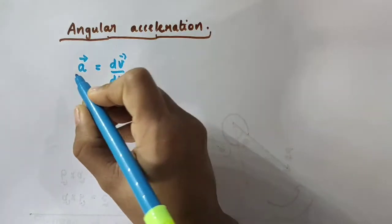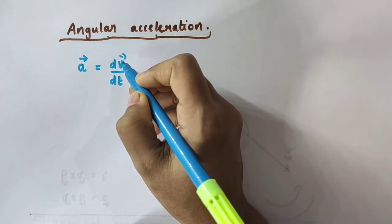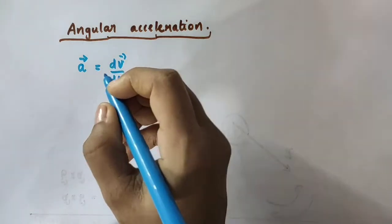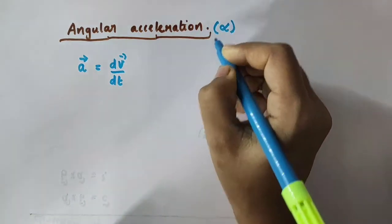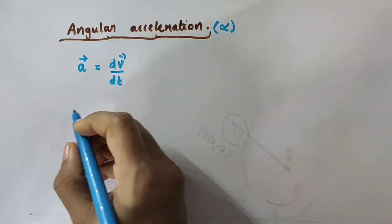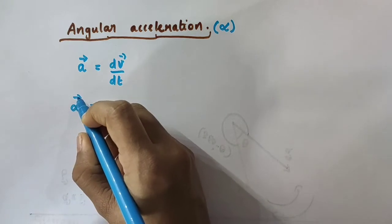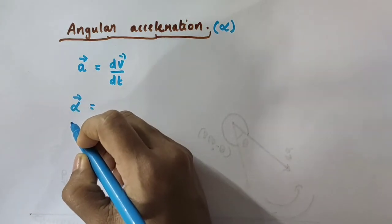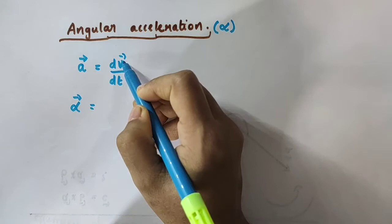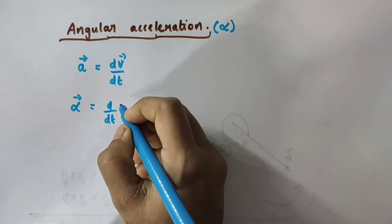This is the linear acceleration — it is the time rate of change of linear velocity, or the velocity in translational motion, that is called linear velocity vector V. Similarly, we can define the angular acceleration. It is represented by alpha — its magnitude is represented by alpha. We can define the angular acceleration, which is represented by vector alpha, because angular acceleration is also a vector quantity. Vector alpha is the time rate of change of angular velocity. Angular acceleration is defined as the time rate of change of angular velocity, where angular velocity is represented by vector omega. I am taking this as equation number 1.